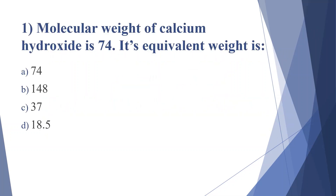First question: molecular weight of calcium hydroxide is 74. Its equivalent weight is — option A: 74, option B: 148, option C: 37, option D: 18.5. Answer is option C, 37.